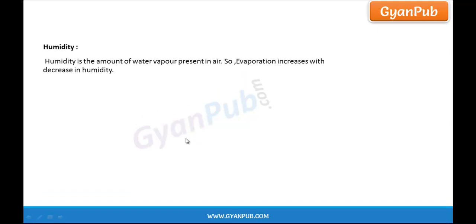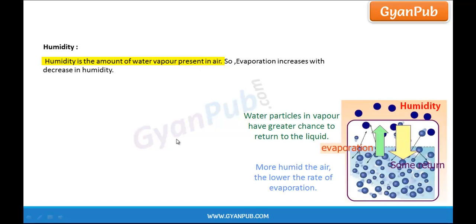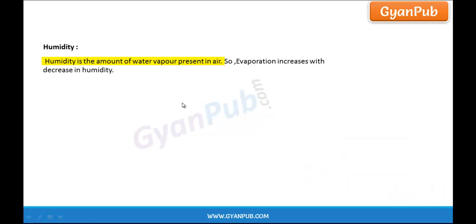Coming to humidity — humidity is nothing but the amount of water vapor present in the air. Evaporation increases with decreasing humidity. Decreasing humidity means the amount of water vapor is less. The atmosphere can hold a particular amount of water vapor, and if the water vapor present is less than that, then evaporation increases. So if the humidity is less than the holding capacity of the atmosphere, evaporation increases.